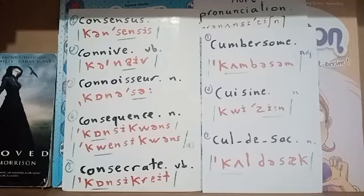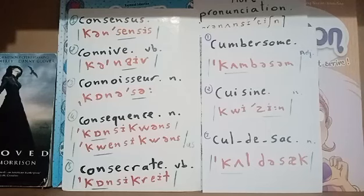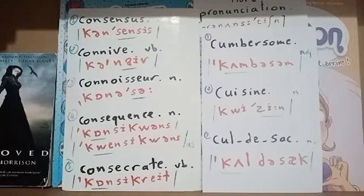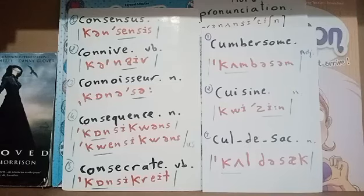The third word is connoisseur. Connoisseur is a three-syllable word: con-nois-seur. The last syllable, 'seur,' should have the primary and main stress. The second stressed syllable is the first syllable, 'con.' We say a connoisseur.